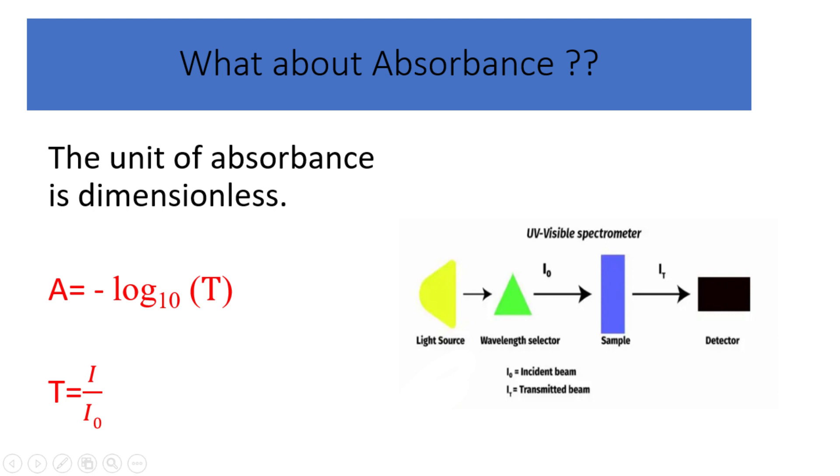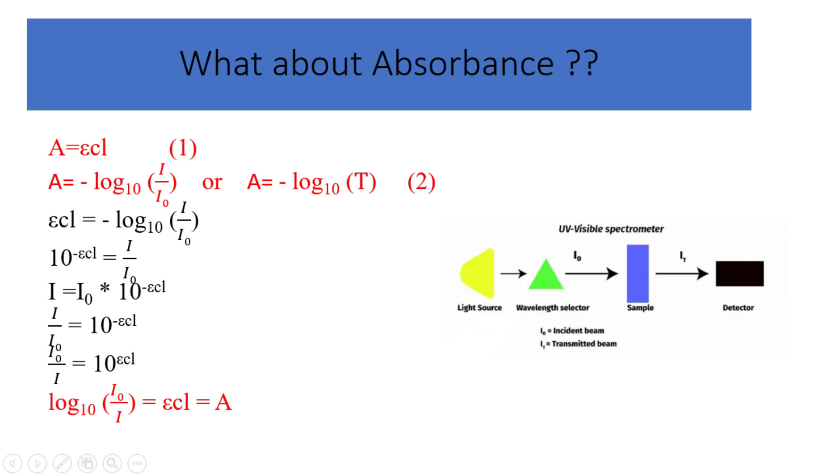In this case, I represents the intensity of the transmitted light, and I naught denotes the initial or incident intensity of the light. Another equation that defines the relation between the incident light and transmitted light is I equal I naught times 10 to the power of negative epsilon C L. By combining the two equations of absorbance, you will get that I over I naught equals 10 to the power of negative epsilon C L.